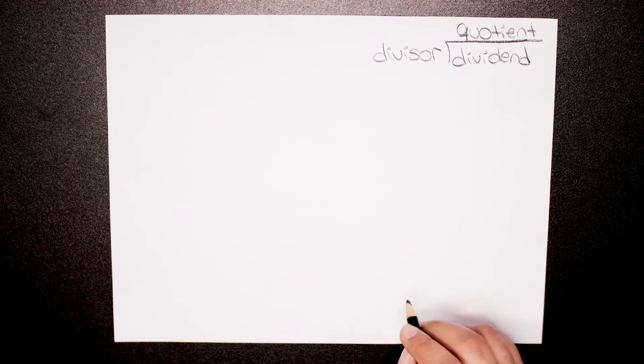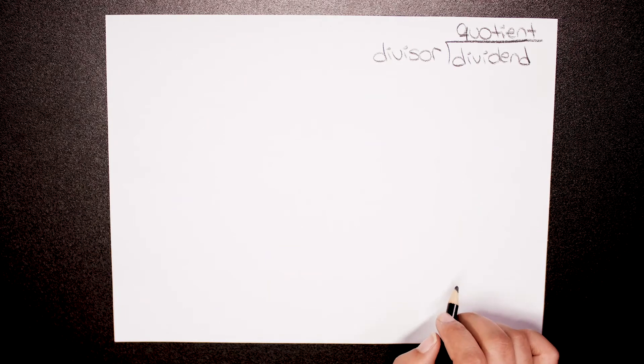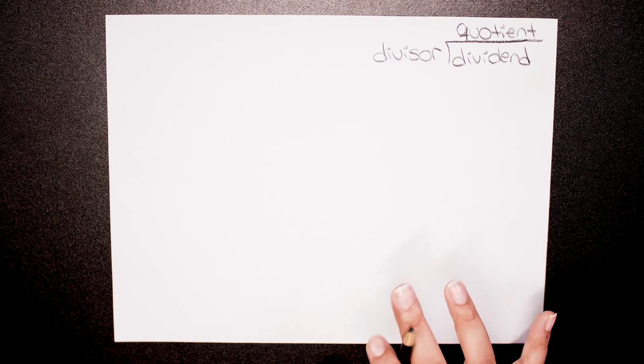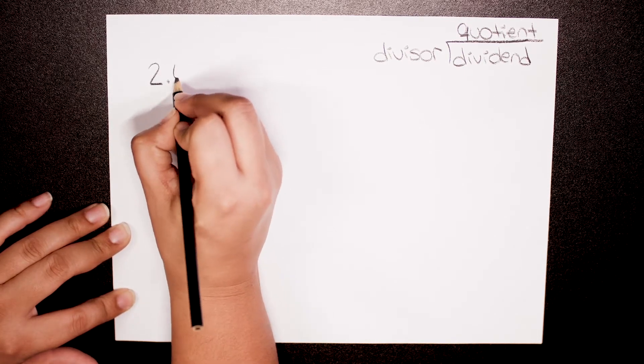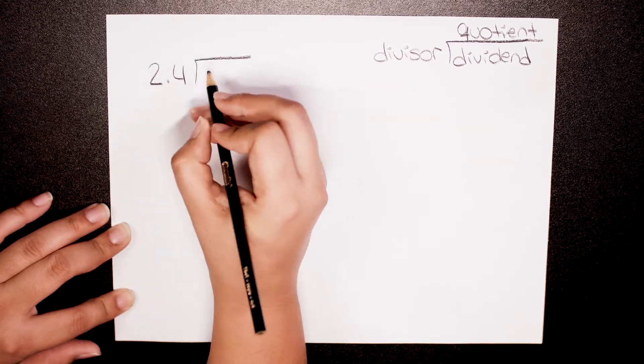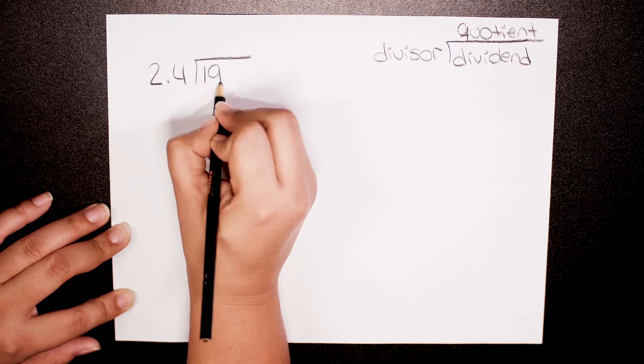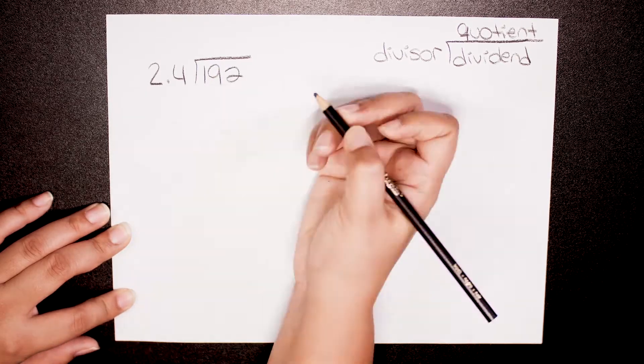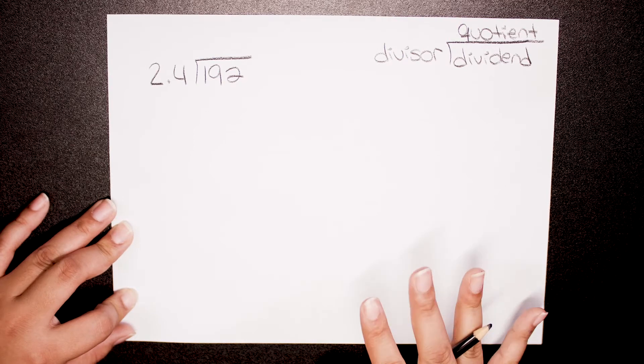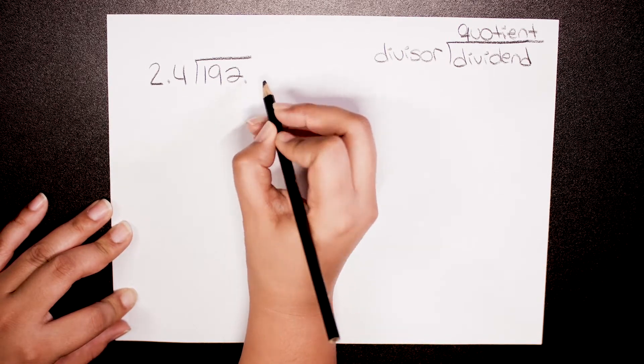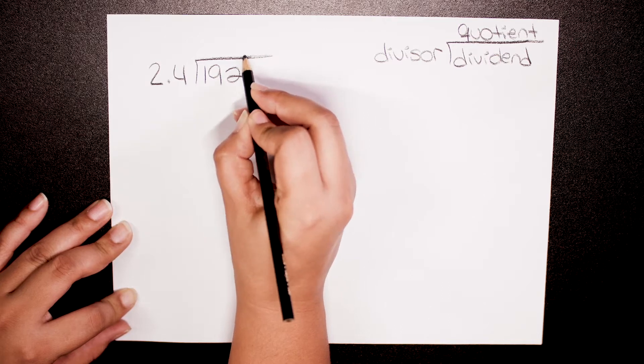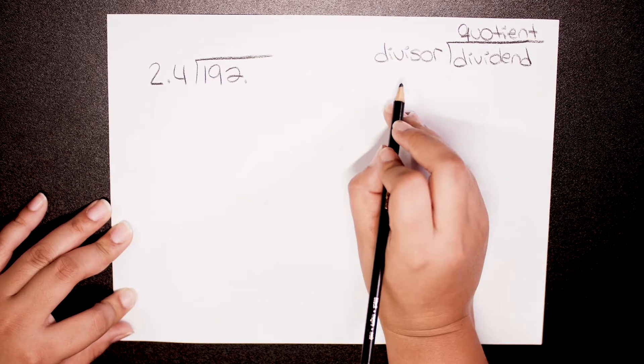All right guys, in this video we are gonna divide a whole number by a decimal. So how about if we divide this decimal and this whole number? Don't forget that every whole number has an invisible decimal point at the end, even though you do not see it.